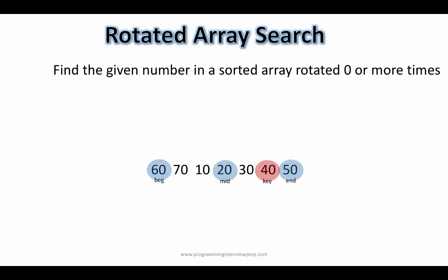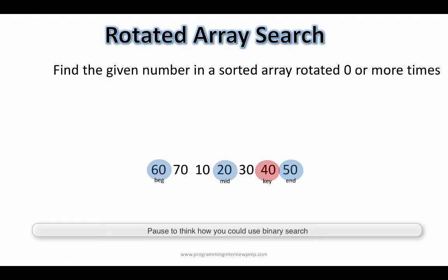However, numbers bigger than 20, like 60 and 70, are also on the left hand side. So how do we go about using binary search? How do we decide if 40 would be on the left hand side of the mid or on the right hand side of the mid?